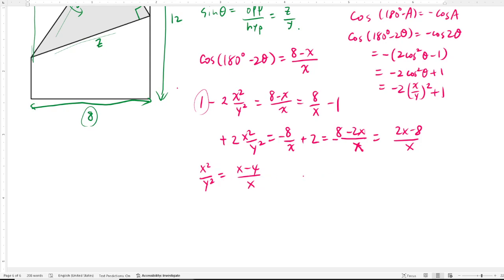And now we flip both sides upside down, so we have y squared over x squared equals to x over x minus 4.